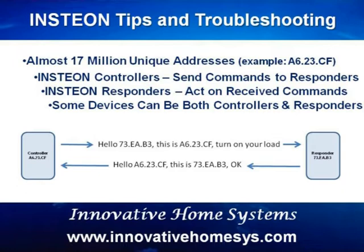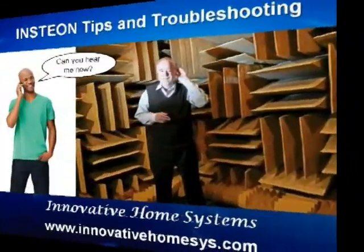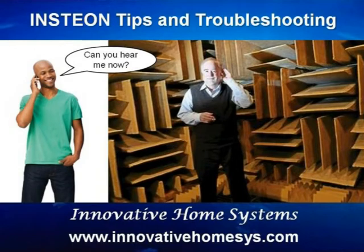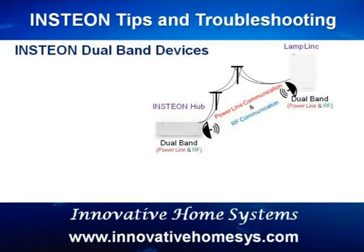Occasionally, conditions can exist that can prevent even the most robust communications method from working properly. Think of trying to carry on a conversation with a friend next to a jet aircraft takeoff — the noise level is simply too great to be heard. Another example might be trying to talk with someone in a soundproof room; the walls effectively isolate your friend by attenuating the sound until it becomes inaudible. But you may still be able to communicate if you both have a cell phone and you're in range of a signal. Similar situations can occur with Insteon messages in your home.